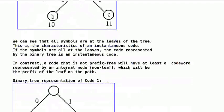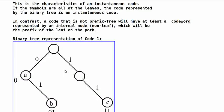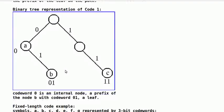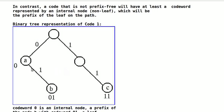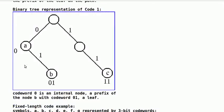In contrast, a code that is not prefix-free will have at least a codeword represented by an internal node, non-leaf, which will be the prefix of the leaf on the path. The following figure shows the binary tree representation of code 1, in which A with codeword 0 is an internal node, a prefix of the node B with codeword 01, a leaf.